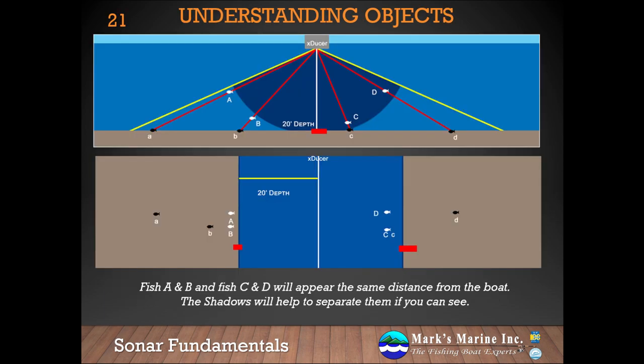So how do you know if you're looking at a fish or a rock? If it's a fish, the shadow will not be directly adjacent to the target. If the shadow is separated from the target, you know that target is up off the ground. If the shadow is right next to the target, you know that target is right on the ground. The closer the shadow is to the target, the closer that object is to the ground.